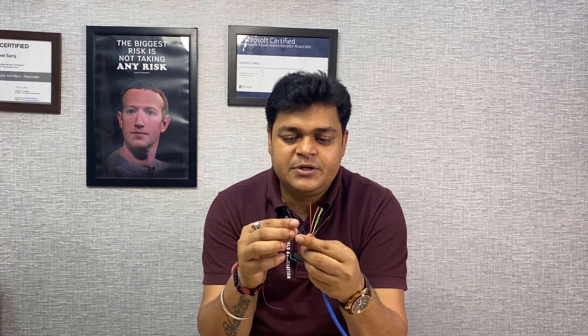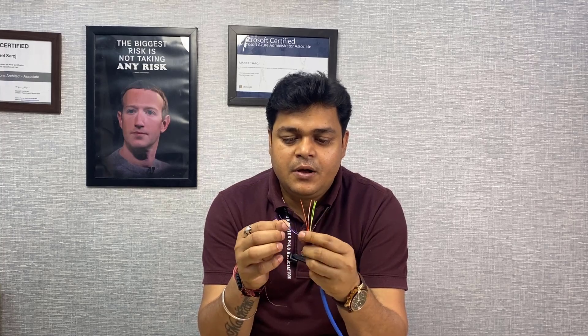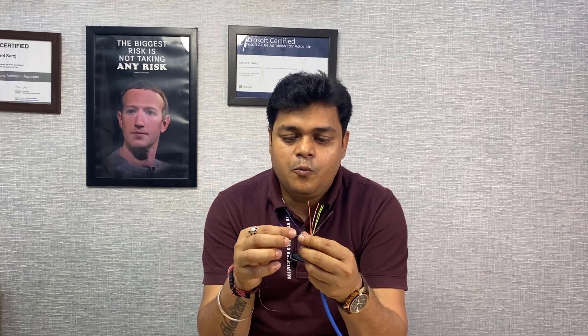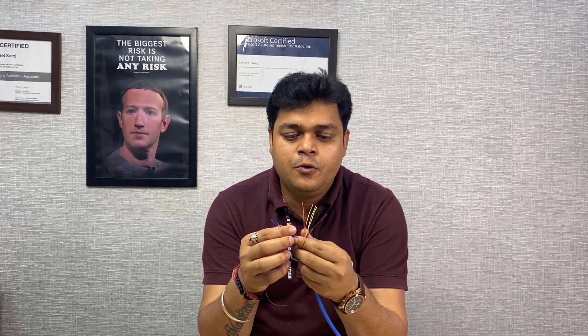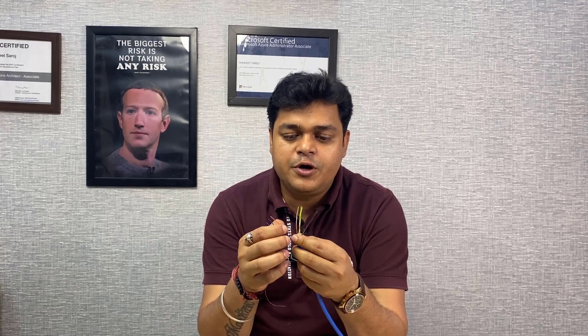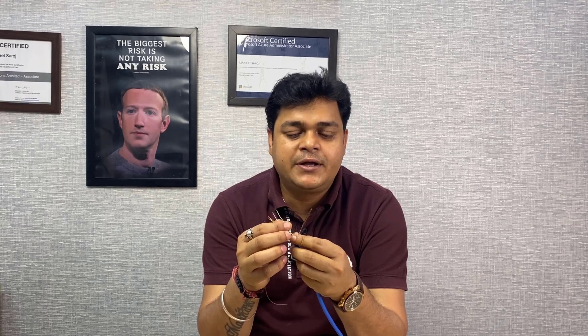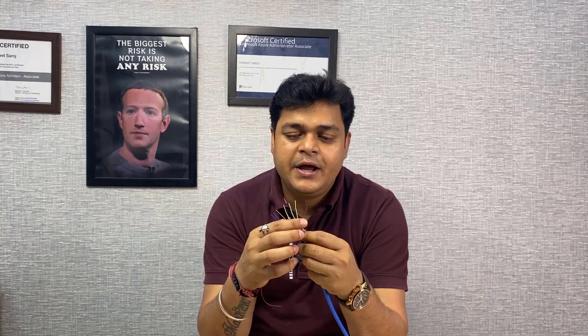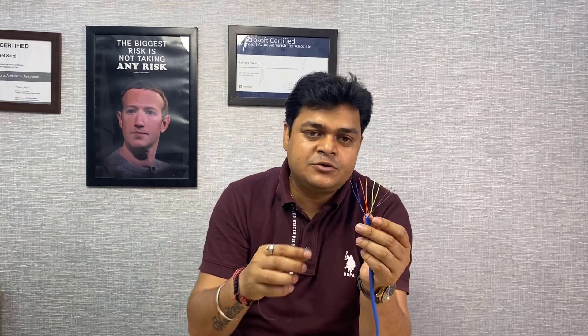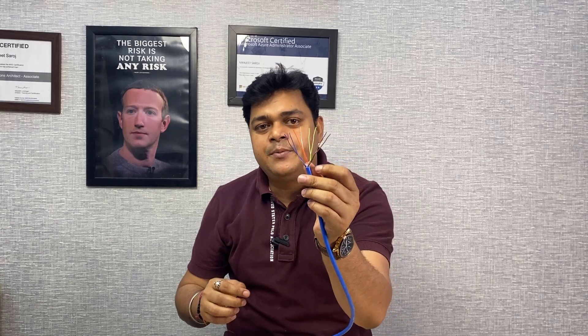The eight wire colors are: white-orange, orange, white-green, green, white-blue, blue, white-brown, and brown. These are the eight different types of wires we are able to find inside the UTP cable.